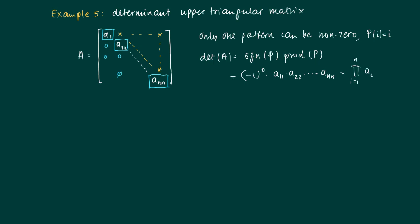So any upper triangular matrix — or lower triangular matrix, as we can also conclude — has as its determinant the product of the diagonal elements.